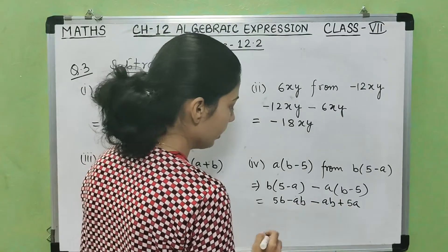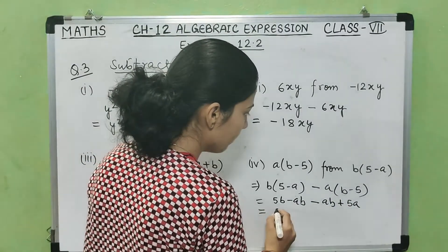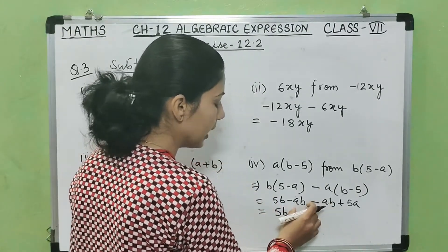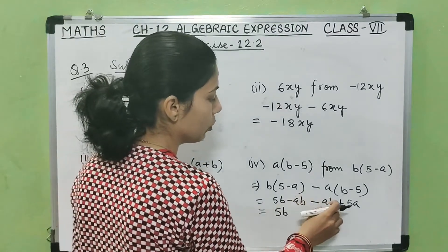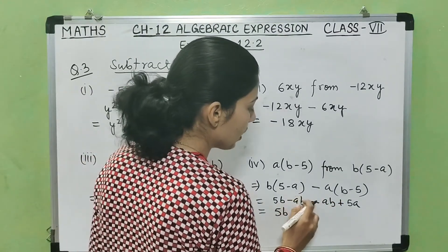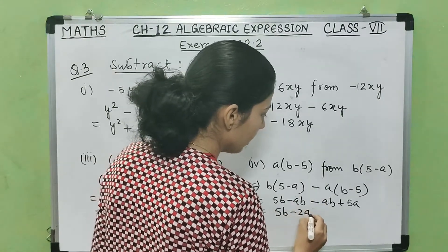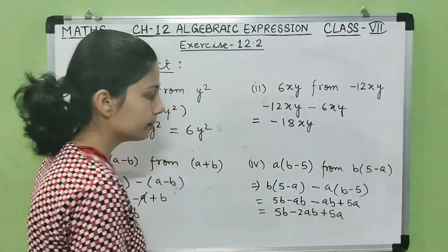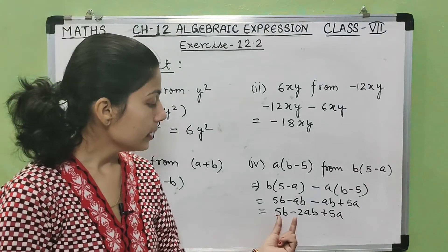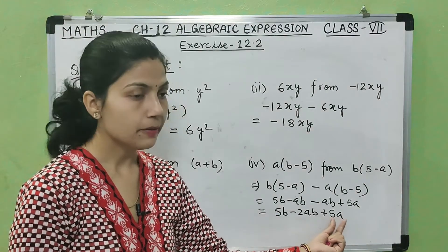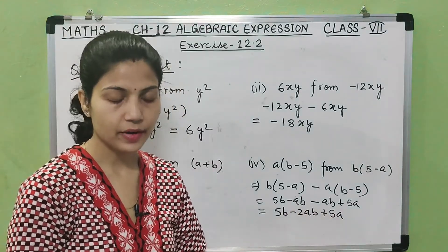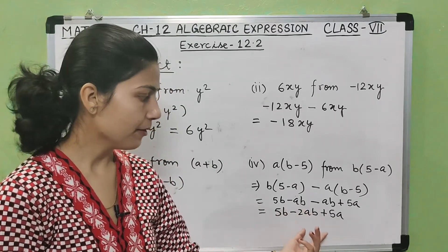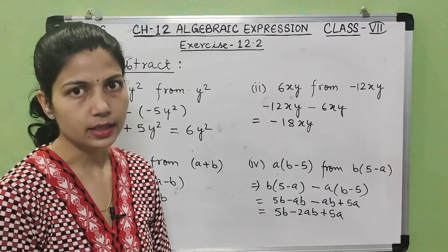Both negative terms become positive when multiplied. Now collecting terms: 5b has no other like term. The two minus ab terms — both negative — add up: minus 1 minus 1 gives minus 2ab. Remaining is plus 5a. The three terms 5b, minus 2ab, and 5a are all unlike terms with different algebraic factors, so the answer remains 5b minus 2ab plus 5a.